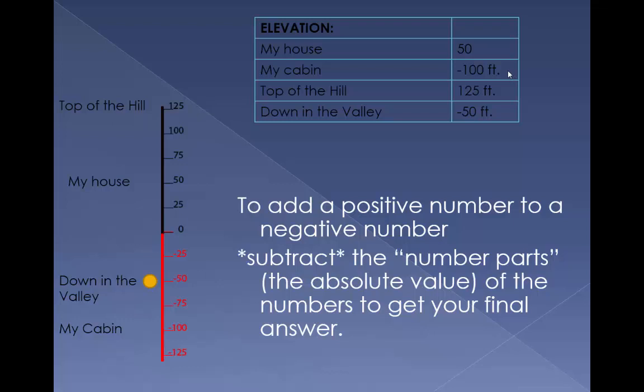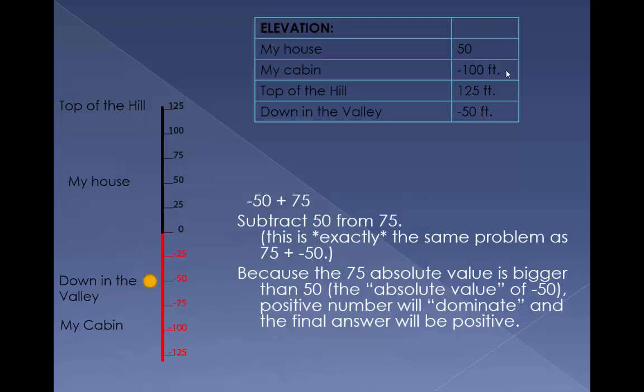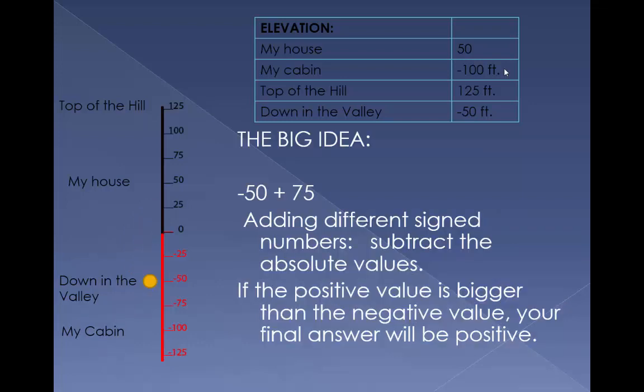To add a positive number to a negative number, subtract the number parts — the absolute value — of the numbers to get the final answer. Negative 50 plus 75: subtract 50 from 75, exactly the same problem as 75 plus negative 50. Because the absolute value of 75 is bigger than the absolute value of negative 50, that positive number will dominate — the final answer will be positive. The big idea: adding different sign numbers, subtract the absolute values. Always subtract the smaller absolute value from the bigger. If the positive value is bigger than the negative value, your final answer will be positive.